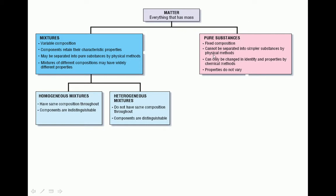Pure substances have a fixed composition — there is only one thing present and we cannot vary the amounts of the components. They cannot be separated into simpler substances by physical methods, and the composition of one part of a pure substance is identical to the composition of any other part.